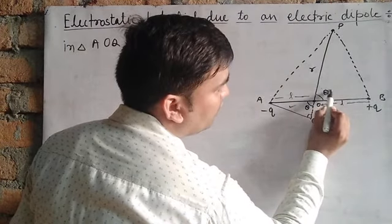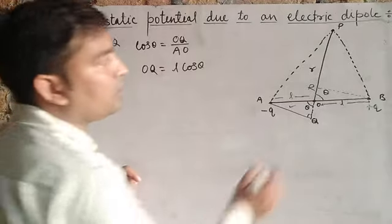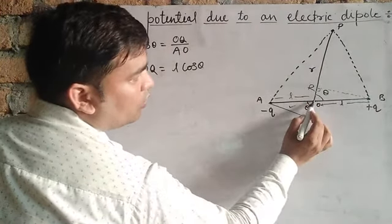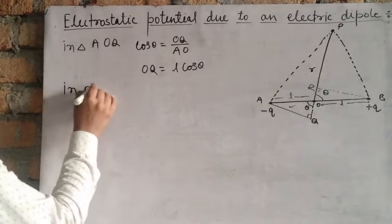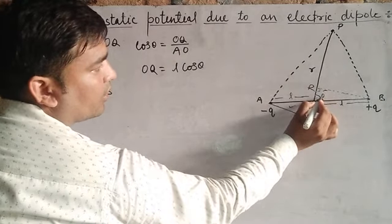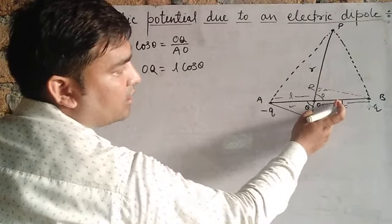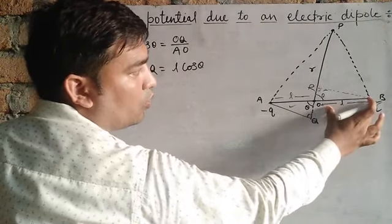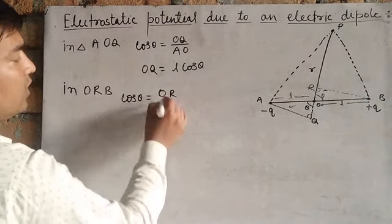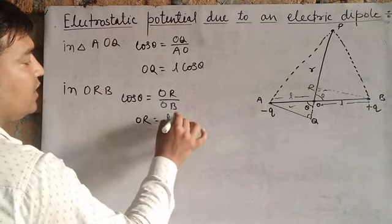Now draw a perpendicular from point B to the line PO, meeting at point R, and assume that PR is approximately equal to PB. In triangle ORB, the angle at O is theta, OB is the hypotenuse, and OR is the base. Using cos theta equals base upon hypotenuse, OR equals OB cos theta, and since OB equals L, OR also equals L cos theta.